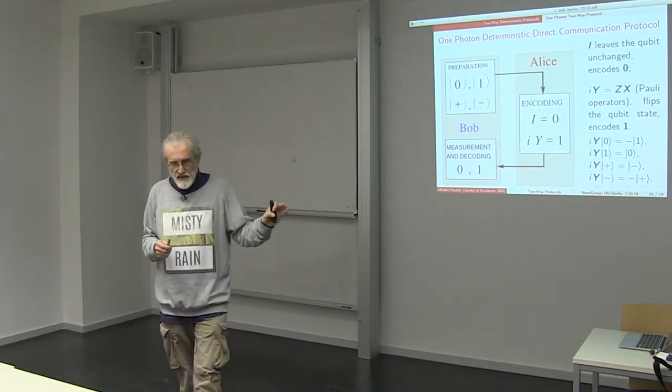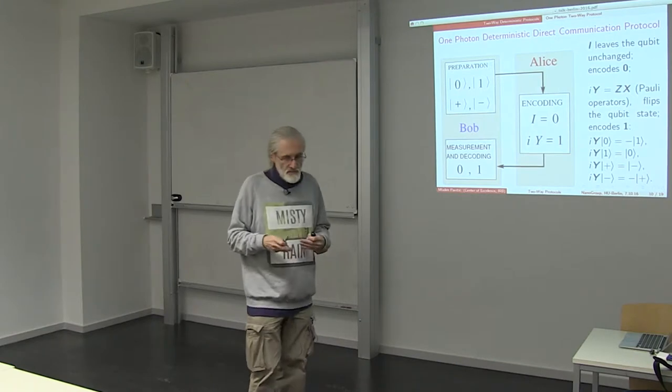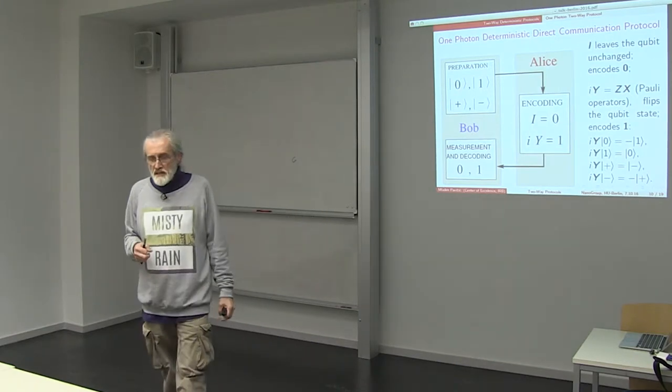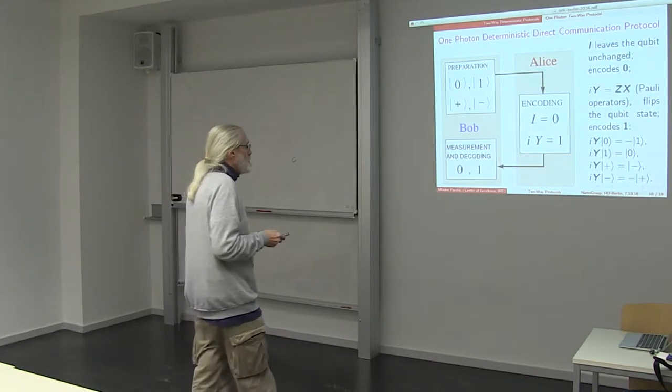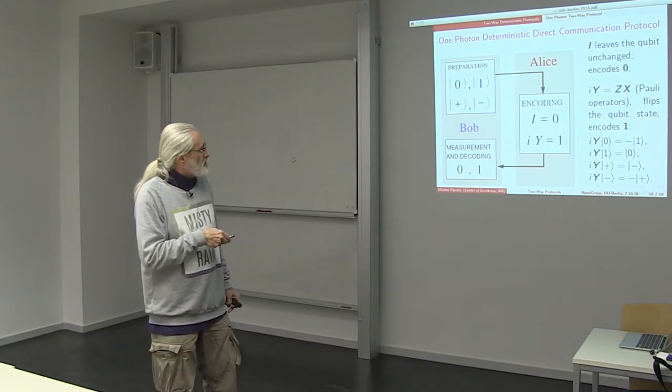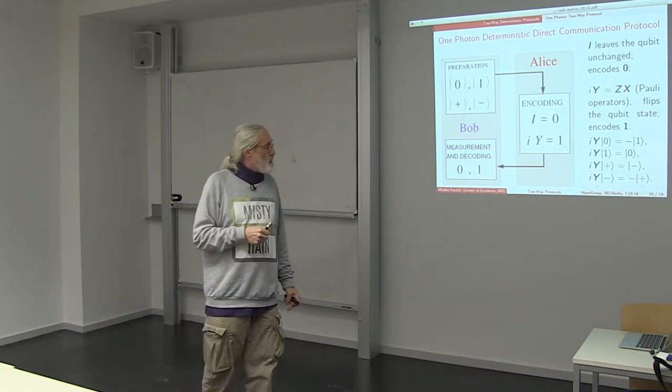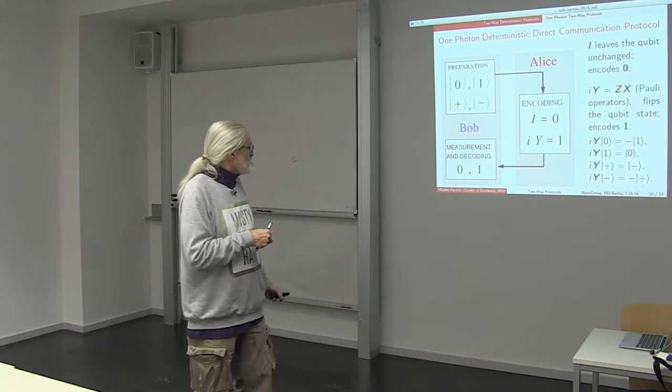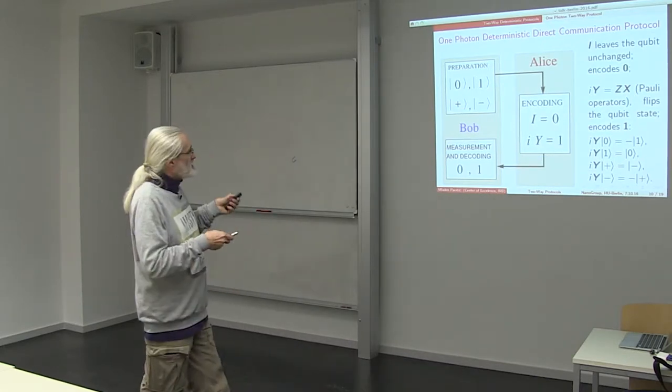So Alice's sending of messages 0 and 1 consists in either doing nothing, just returning the photon back to Bob - in that case Bob would recognize that as message 0 because he would receive the same state in the same basis in which he sent it - or to apply one of the Pauli operators and as a result to flip the states.